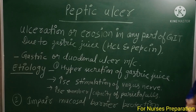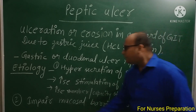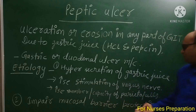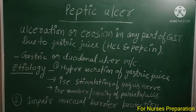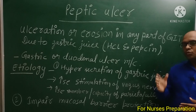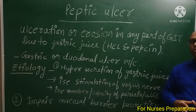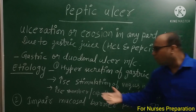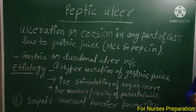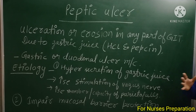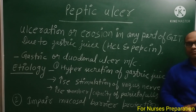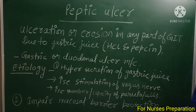दूसरा important कारण है impaired mucosal barrier protection। हमारे GIT के organs की protection के अंदर mucosal layer की एक protective covering पाई जाती है। यदि वो impaired functioning हो जाए और proper protection न कर पाए, तो उसके कारण भी person के अंदर peptic ulcer develop हो सकते हैं। You can take screenshot for your revision.